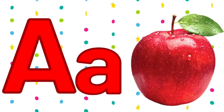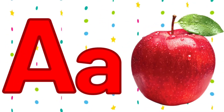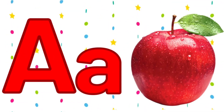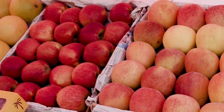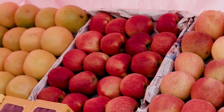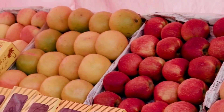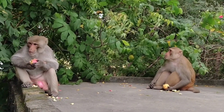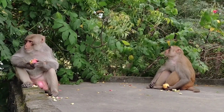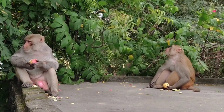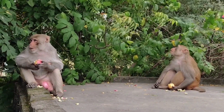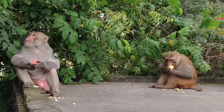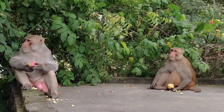Let's learn alphabets. A. A is for apple. Apple means save. Its spelling is A-P-P-S-E. Apple. A for apple.